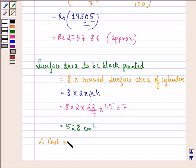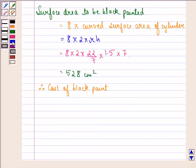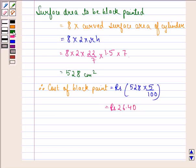Therefore, cost of black paint is given to us, for 1 cm² it is 5 paise. So for 528 cm² in terms of rupees it will be rupees 528 into 5 by 100, and that is equal to rupees 26.40.